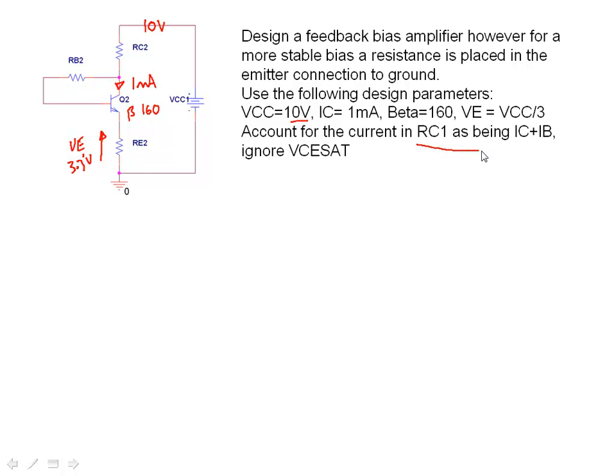in RC1 as being IC plus IB. So here at the top the current flowing in is effectively IC plus IB. Quite often you can ignore the value of IB flowing through there and then it makes a nice simple equation. For RC2 this one we've added a little bit more complexity in because we've got to account for beta.